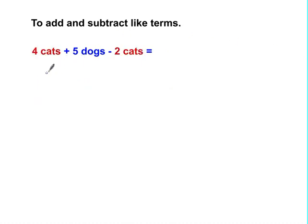Alright, on this problem we have 4 cats plus 5 dogs minus 2 cats. Well, here we're going to keep the cats and dogs separate. So we have 4 cats, to get rid of 2 cats, you're left with 2 cats, 4 minus 2.